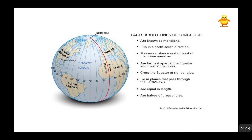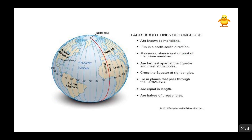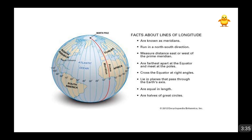Now coming to longitudes. Longitudes are also known as meridians. They run in a north-south direction, as you can see here — they go around the whole earth. They are farthest from each other at the equator. At the equator, the distance between two longitudes is maximum, but as they go toward the poles they meet each other, so the distance becomes zero. All longitudes are equal in length and are basically the halves of a great circle, because each longitude divides the earth into two halves.